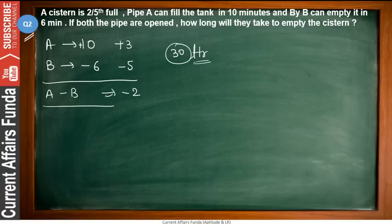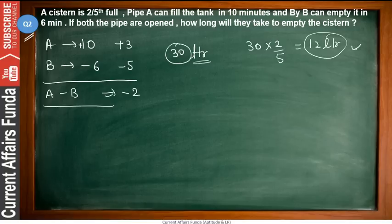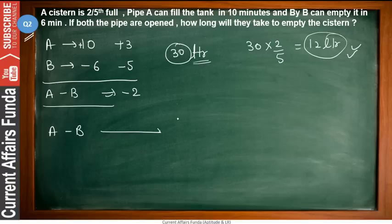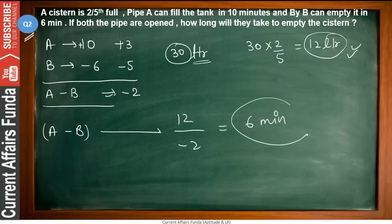The condition is the cistern is 2/5th filled. Total capacity is 30 liters, so 2/5 of 30 = 12 liters of water are in the tank. A and B together will empty these 12 liters. Their combined net efficiency is −2 liters per minute. So they will take 12 ÷ 2 = 6 minutes to empty the cistern. That is the answer.